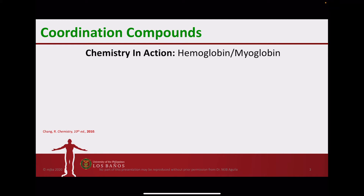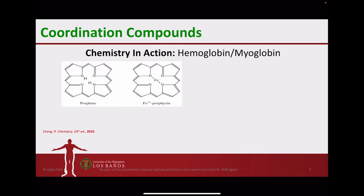There are several examples of coordination compounds in nature. One is hemoglobin or myoglobin, the substance responsible for carrying oxygen in our body — hemoglobin is in the blood and myoglobin is in the muscles. For both, the ligand involved in the structure is a porphyrin structure with four nitrogen atoms, and two of those nitrogens have protons attached. If those protons are removed, this results in a negative two charge for the ligand.